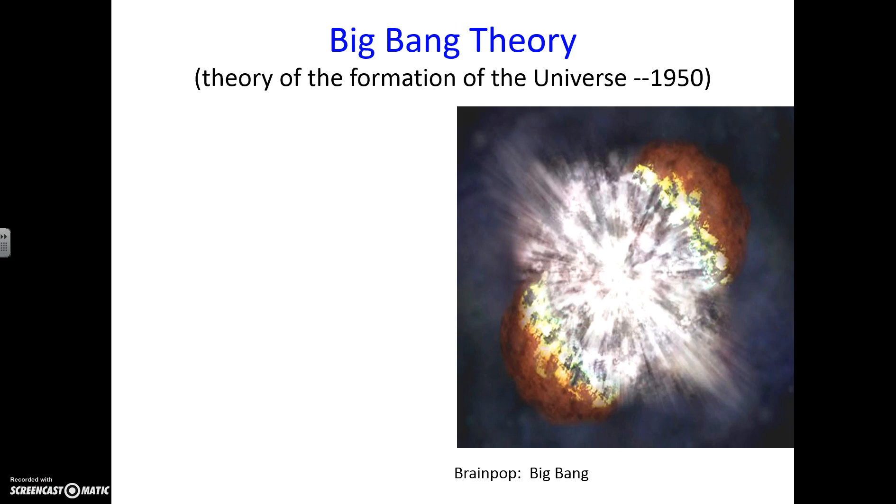All right. So the Big Bang Theory. So going back to, okay, so we have all this stuff in our universe. How did it actually come into formation? So this is a theory that some scientists believe you need to know about the theory in order to make your own beliefs and things like that. So make sure you're getting this down. This is a theory of formation of the universe, and the theory was made in 1950.